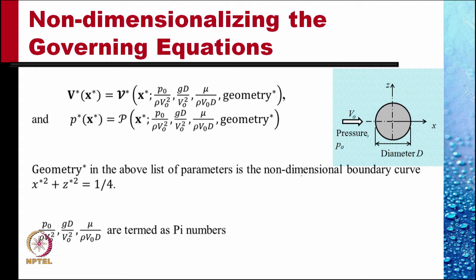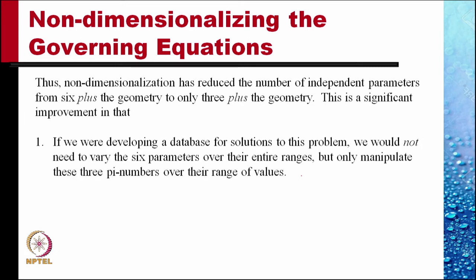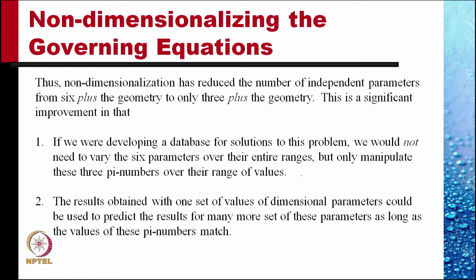Note that these are all dimensionless. Thus non-dimensionalization has reduced the number of independent parameters from six plus geometry to only three plus geometry. This is a significant improvement: if we were developing a database for solutions to this problem, we would not need to vary six parameters over their entire ranges, but only manipulate these three pi numbers. Results obtained with one set of dimensional parameter values could be used to predict results for many more sets, as long as the values of the pi numbers are equal.